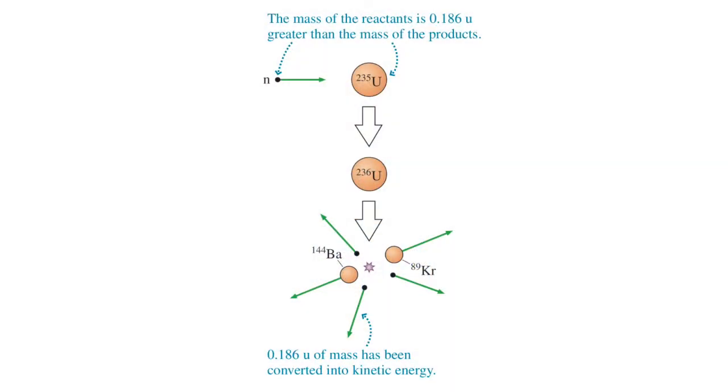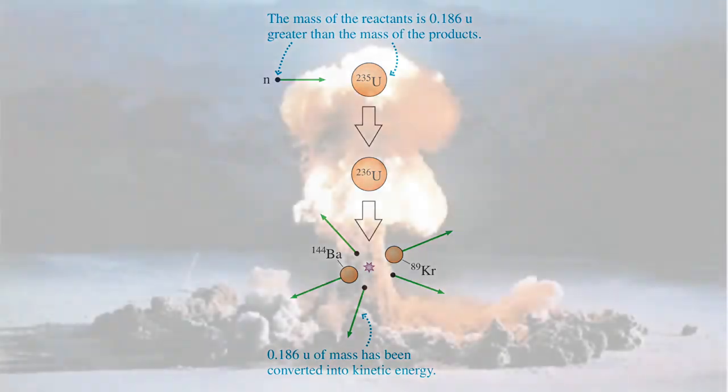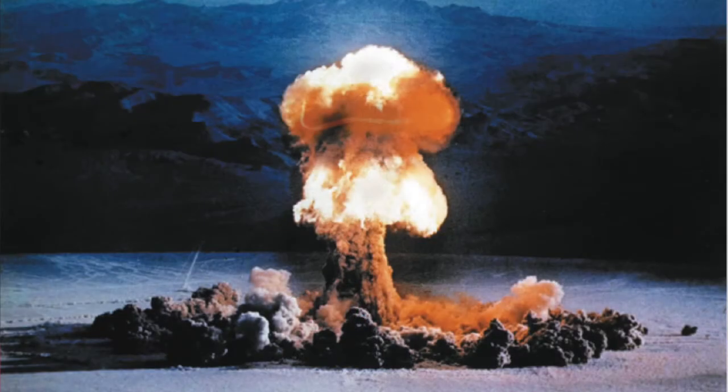You can convert energy to mass — they're freely interconvertible. And that has tremendous practical applications in nuclear energy, because you actually convert measurable amounts of mass to energy with the release of tremendous amounts of energy in a nuclear power plant or a nuclear explosion. That equivalence between matter and energy is perhaps the most profound application of special relativity with the most practical applications.